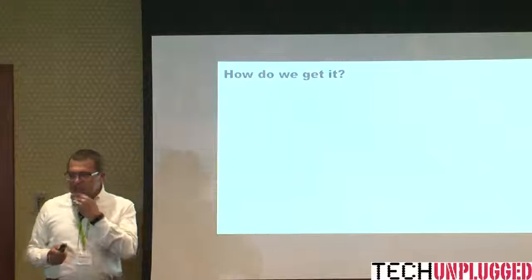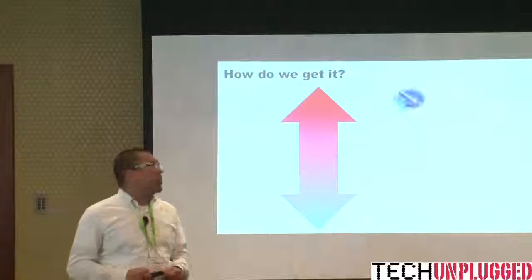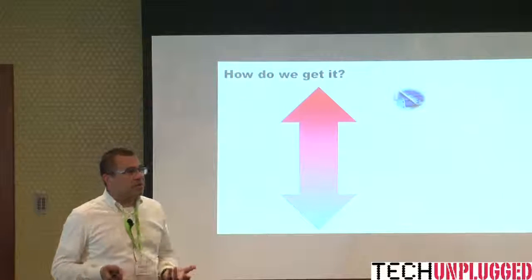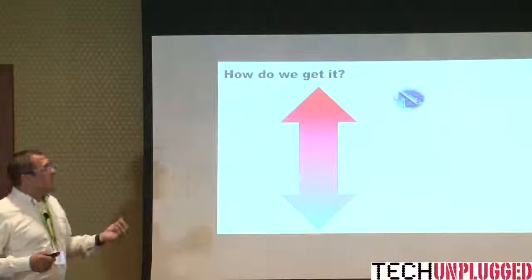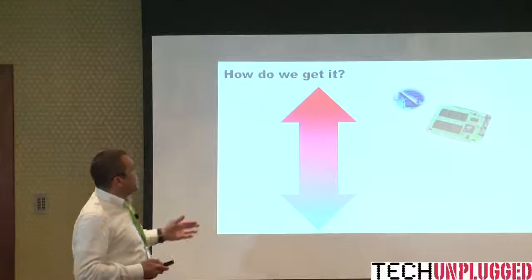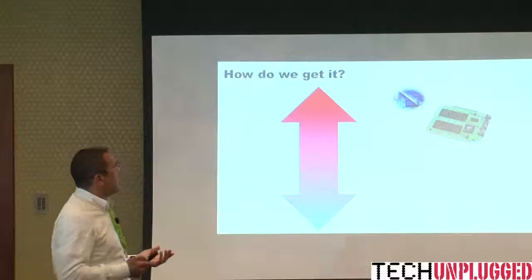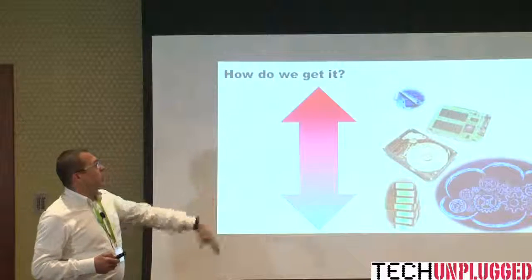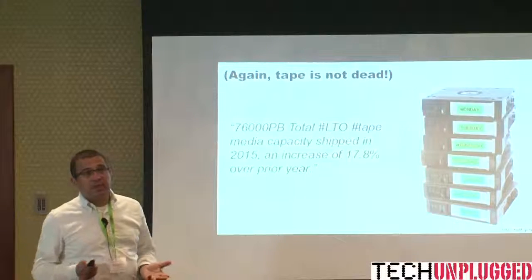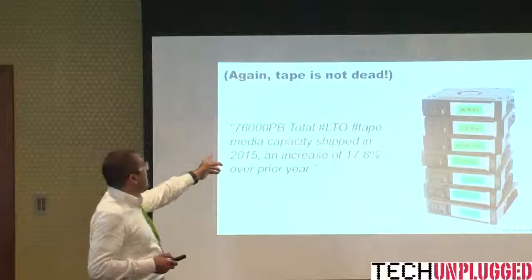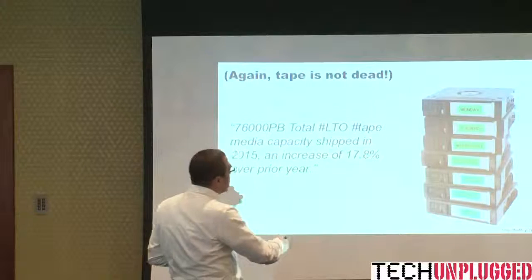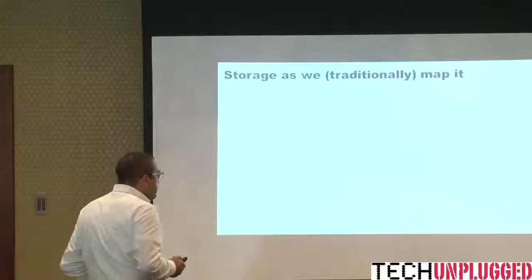When we think about the different media we have in storage, we have RAM as the first tier. Lately we've seen many new startups working in ephemeral storage — EC2 has ephemeral storage, for example. Then we have SSDs or flash in general, disks which are slower, and then tapes and cloud. Even though cloud is growing like crazy, tape is not dead. Last year, 76,000 petabytes of tape storage was delivered to end users, which is 18% growth. So it's still an important media.